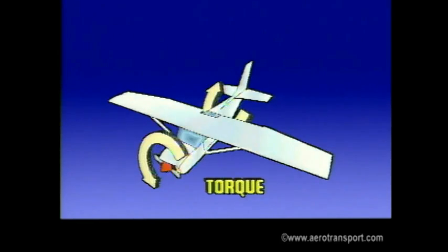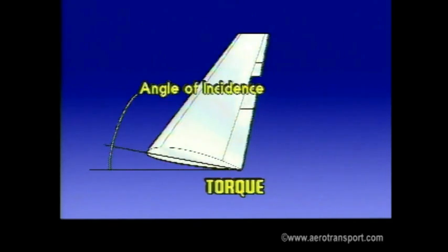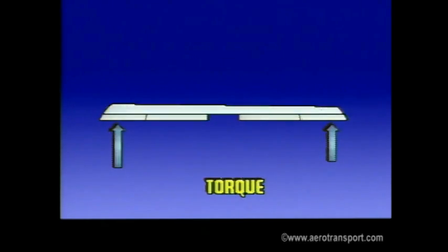Two other forces that affect flight are torque and slipstream. Torque results from the twisting action produced by the plane's engine. In response to Newton's third law, as the engine rotates the propeller in one direction, the plane tries to rotate in the opposite direction. Most North American planes have a propeller that rotates clockwise when viewed from the cockpit. To overcome torque, the left wing is given a slightly higher angle of incidence, and therefore slightly more lift than the right wing.